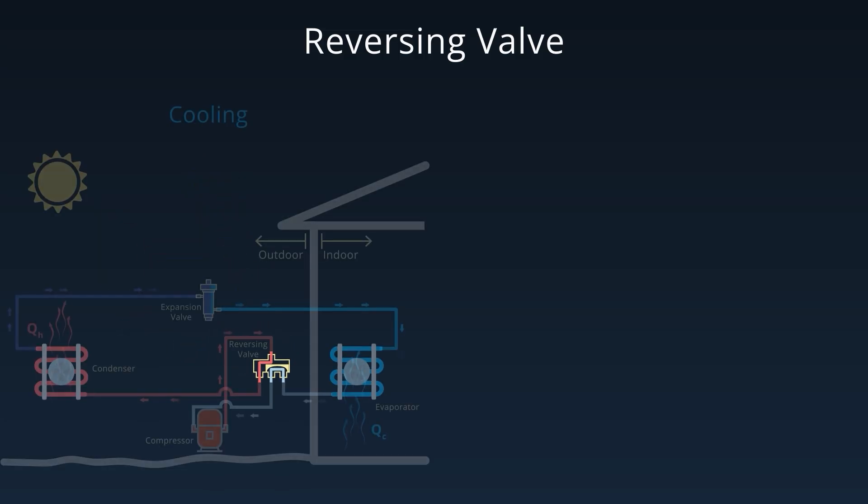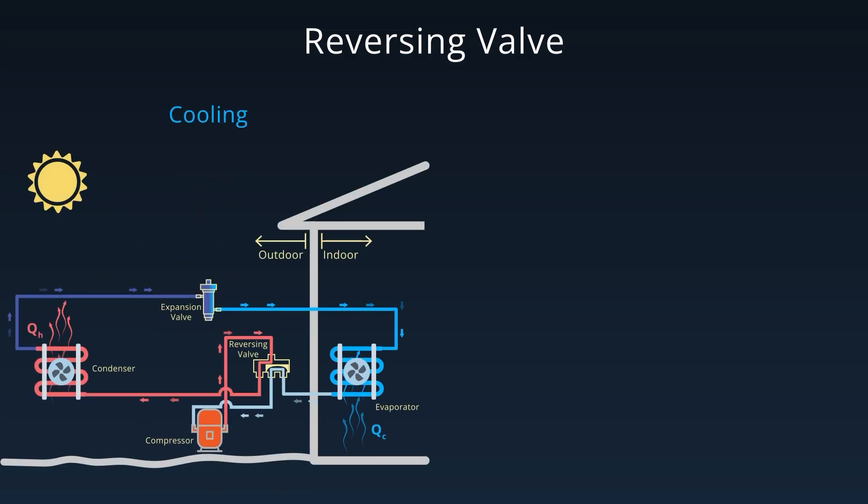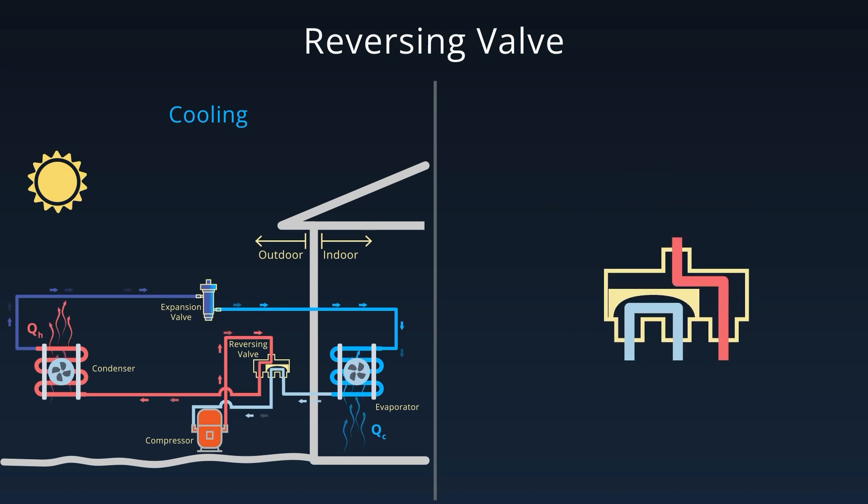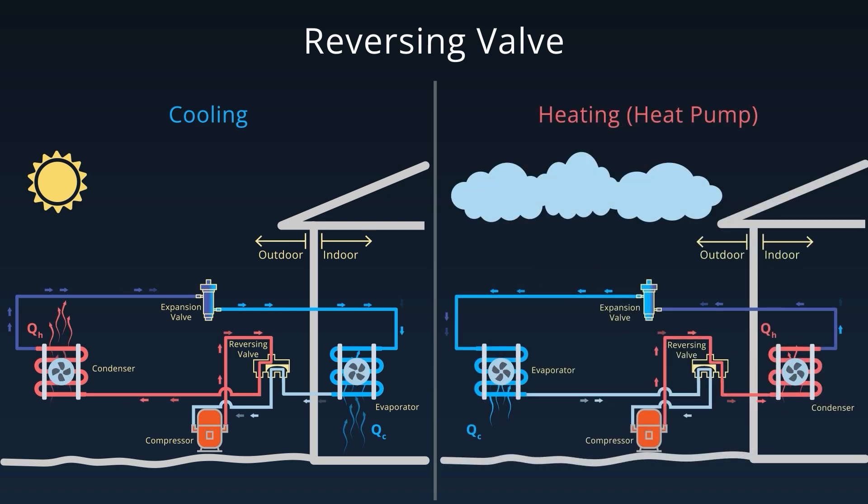In cooling mode, it directs hot and high pressure refrigerant from the compressor to the outdoor coil, turning it into a condenser. In heating mode, it reroutes the flow so that the indoor coil becomes the condenser and the outdoor coil becomes the evaporator. This single component allows the system to flip its function with the push of a thermostat setting.